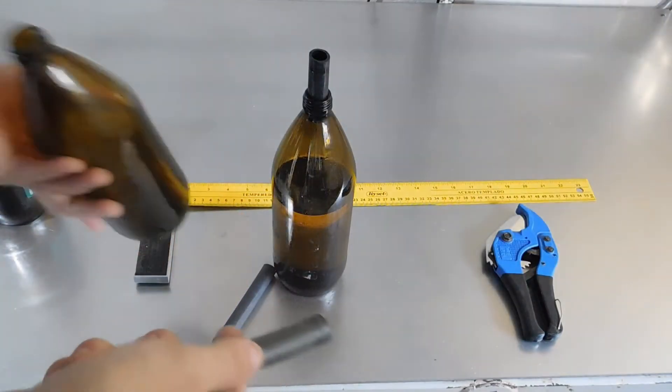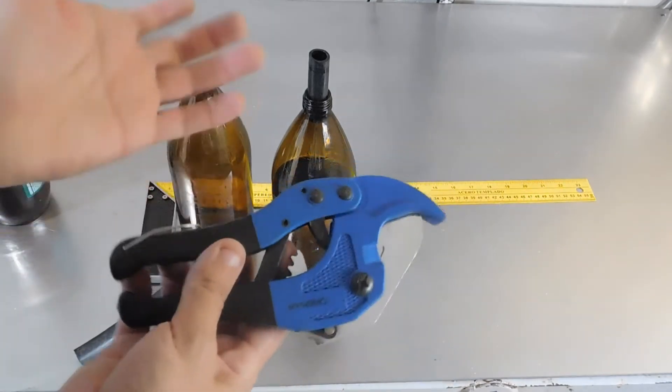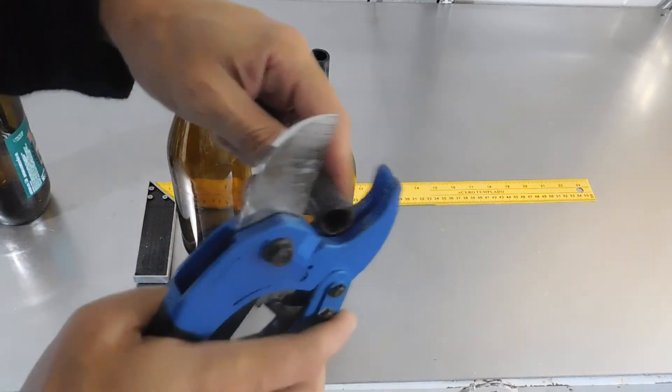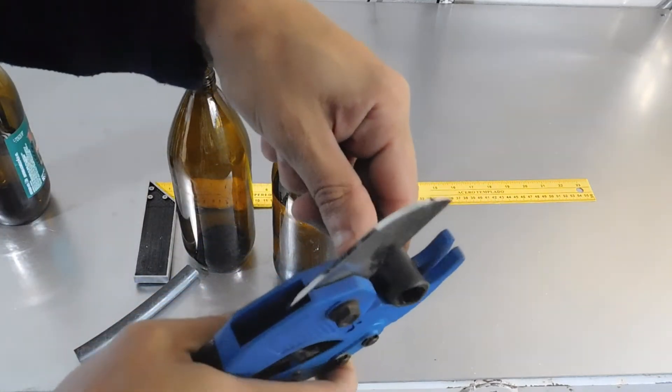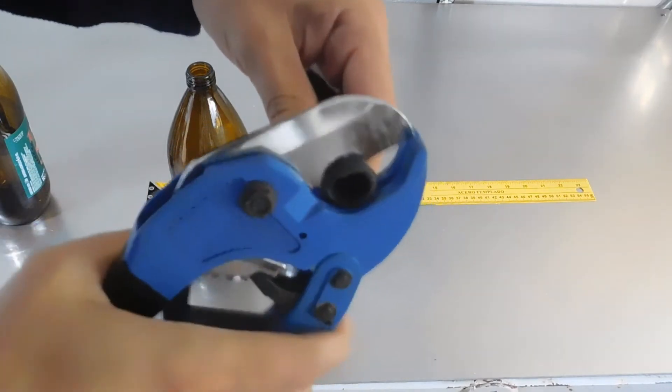Y después lo que tienen que utilizar es este tipo de tijera que les recomiendo para hacer los cortes porque hace unos cortes perfectos. Yo lo que hice fue, tomé el caño y después con esto, con estas tijeras se hacen los cortes. Les voy a mostrar cómo corta.